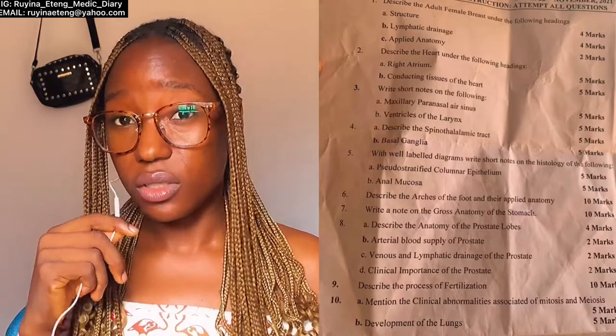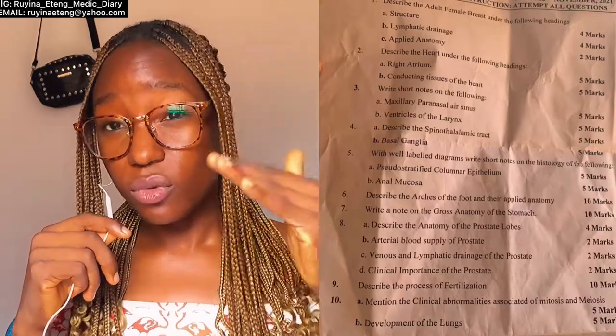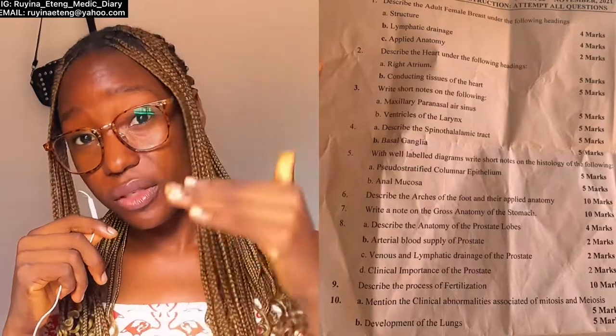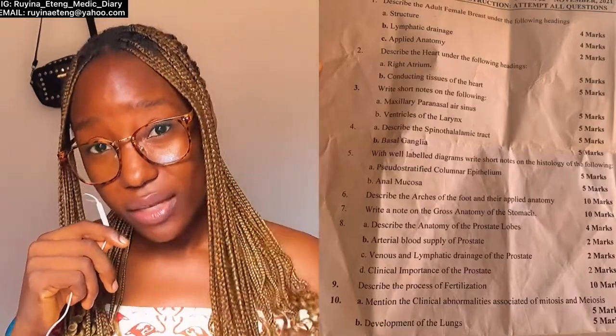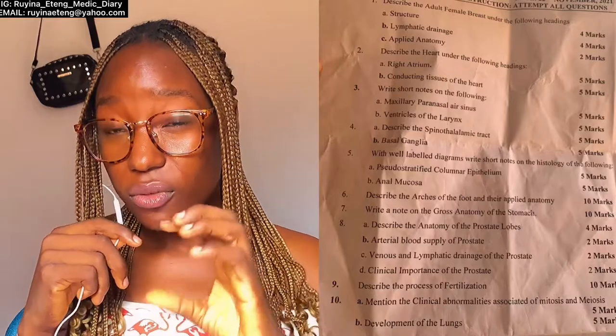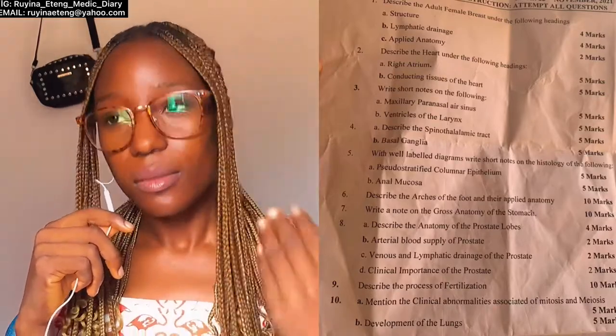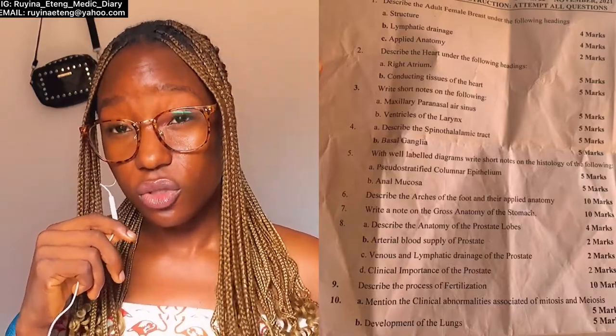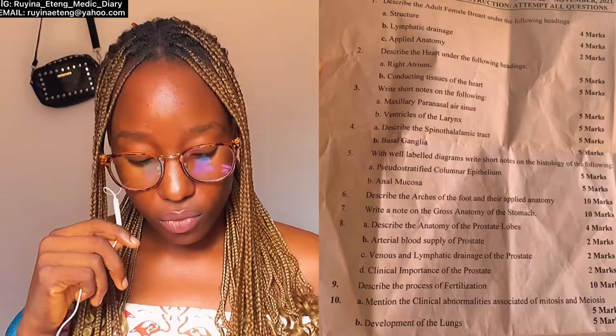For the anal mucosa, remember they are asking you for just the mucosa. The mucosa is made up of three different kinds of epithelium. Start with an introduction of where the anal mucosa is found, then list the epithelium found there. If you can draw a diagram showing the transition from one epithelium to the other, please draw that diagram. Then list the histological features found in the anal mucosa and you'll be good to go.